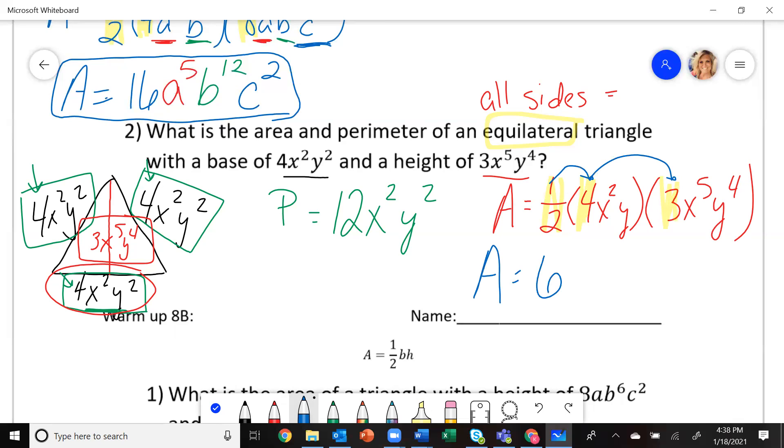Now, for your variables, add the exponents. I've got 2Xs and 5Xs. That is X to the 7th. Your Ys, if there's no number up here, there's a 1. So I have 1 plus 4, which is Y to the 5th. This is what you should have gotten for the area.